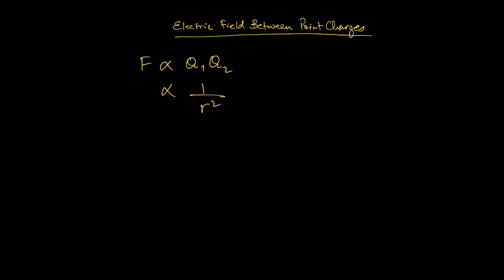R, which I want to define more explicitly, is going to be the distance between the centers of two charged bodies — two point charges. Just make sure we understand that's the distance between them, not the distance from the surfaces, but the distance from the centers of the two charged particles.